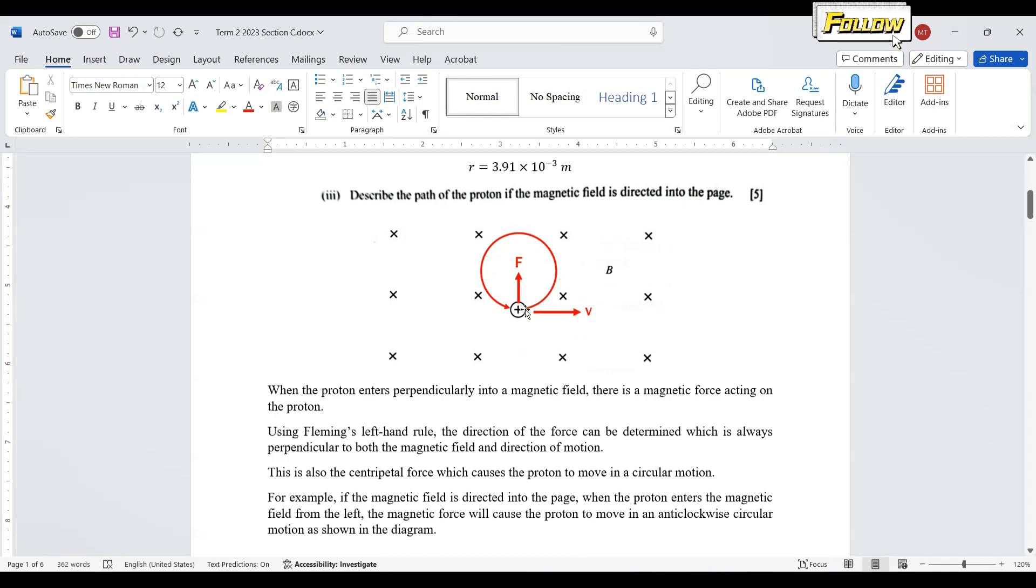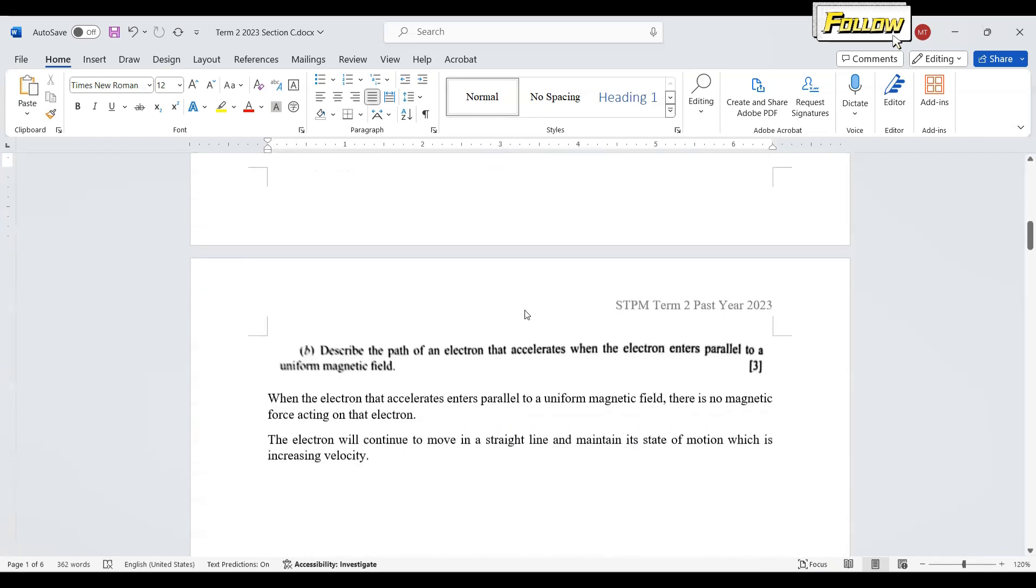Moving on to the next question: describe the path of an electron that accelerates when the electron enters parallel into a uniform magnetic field. This time it enters parallel, so there is no change.